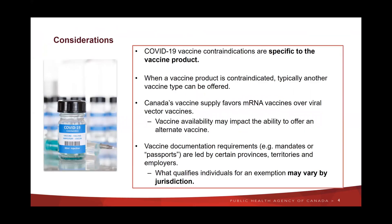There are some important considerations to make when considering vaccine contraindications. COVID-19 vaccine contraindications are specific to the vaccine product, so typically, when one vaccine is contraindicated, another can be offered. Our vaccine supply in Canada does favor mRNA vaccines over viral vector vaccines, so vaccine availability may impact the ability to offer an alternate vaccine.